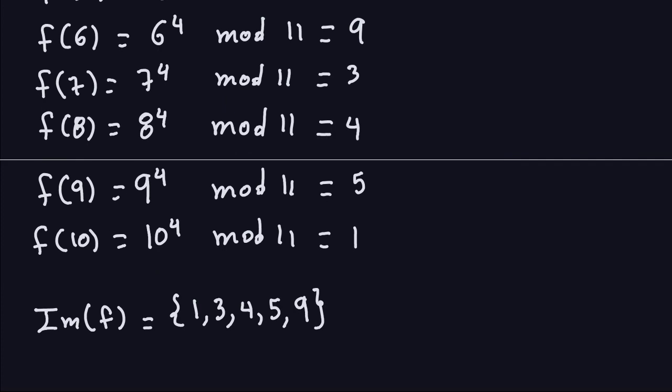So a function is a machine that takes input and gives you output — very similar to functions in Java or any programming language. In the next video, I'll talk about specific kinds of functions with special characteristics, and hopefully we'll be able to define what a one-way function is. I'll see you in the next video.